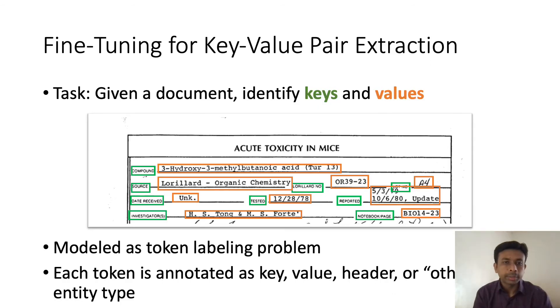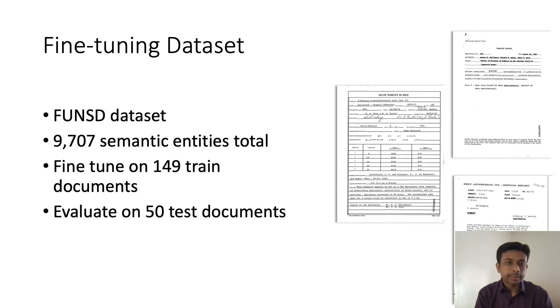For fine-tuning, we are using the key-value pair extraction task. Given a document, the task is to identify the keys and values. For example, in this document, for the key 'date received,' the value is unknown. We model this problem as a token classification problem where each token is classified as key, value, header, or other entity type. The dataset is the FUNSD dataset. It has 149 train documents and 50 test documents, so this is a small dataset.